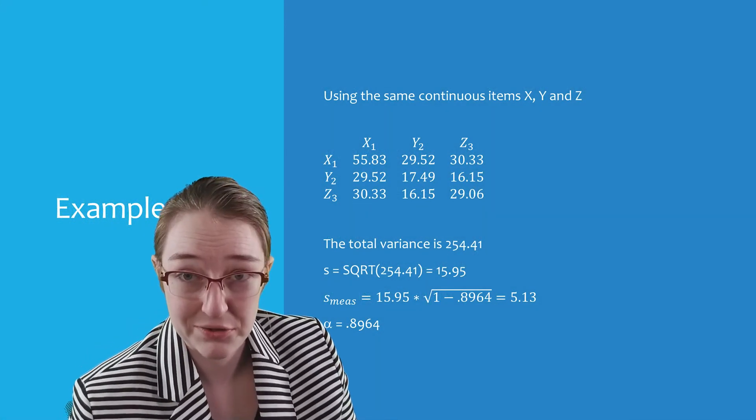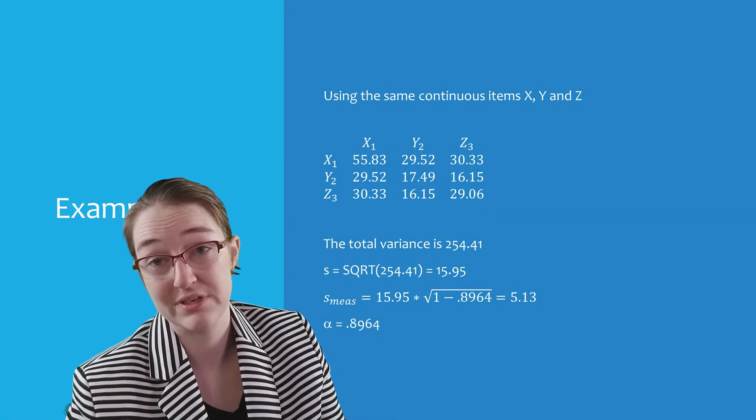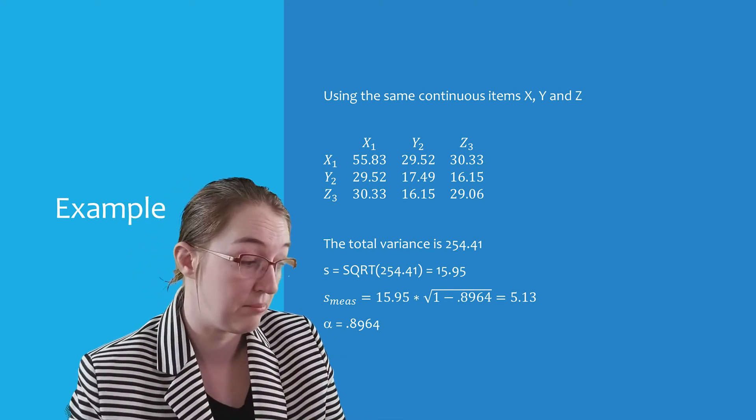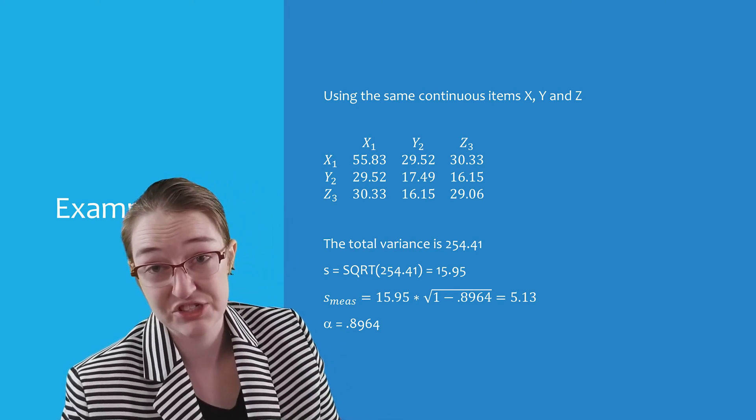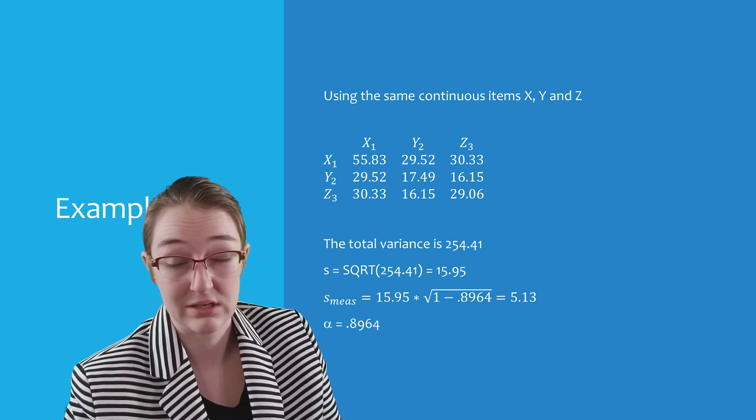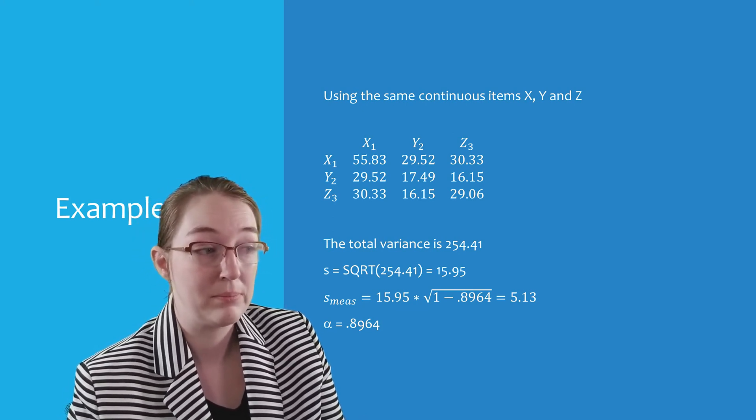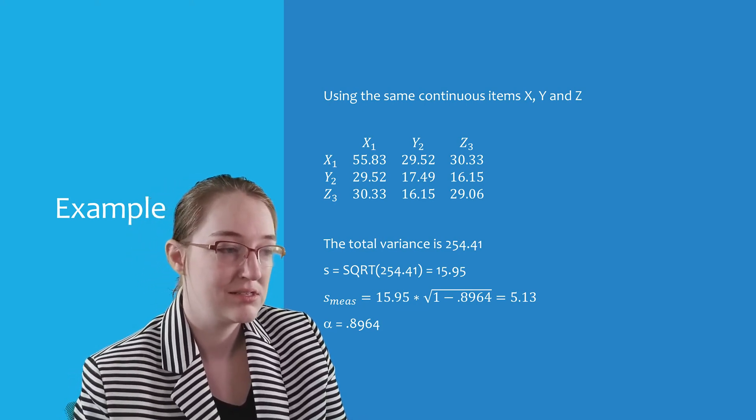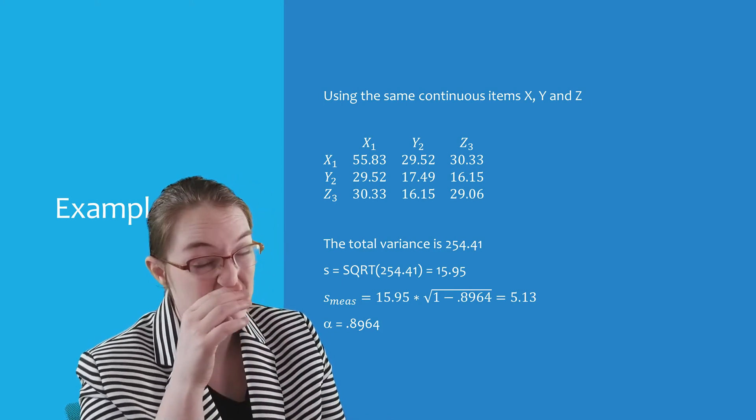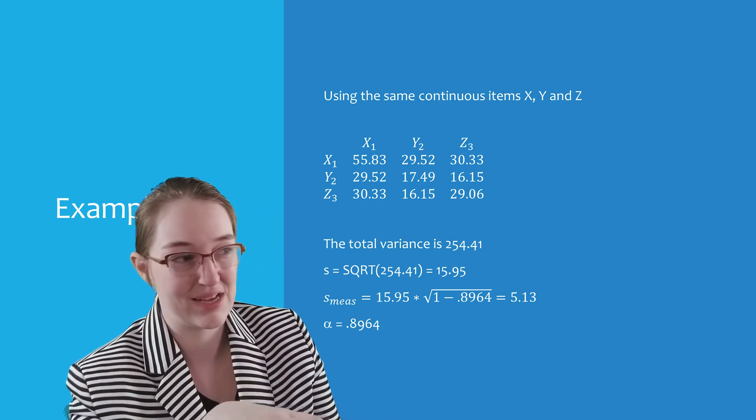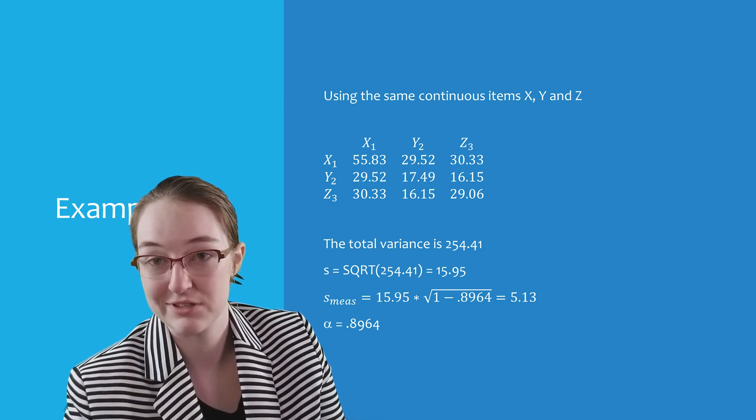So here is a token example. I encourage you to work through the examples also in the book and the lecture notes using R as well as the ones I gave you on the homework. So here we are using those same three continuous items to give us an estimate of standard error of measurement.